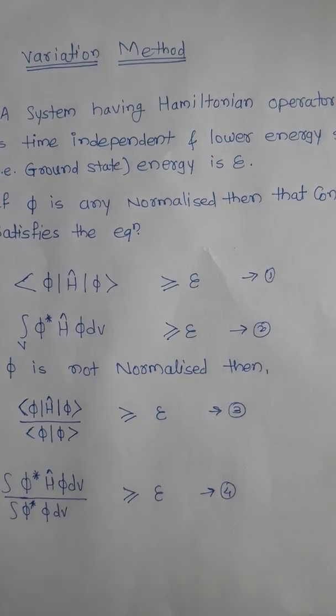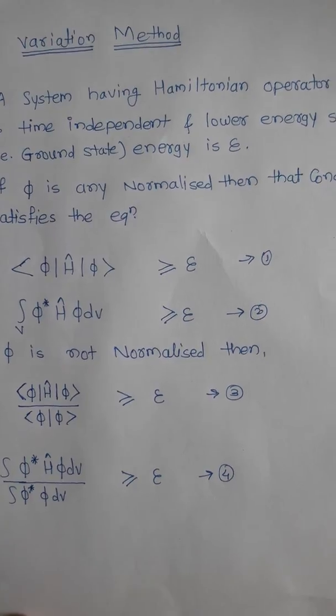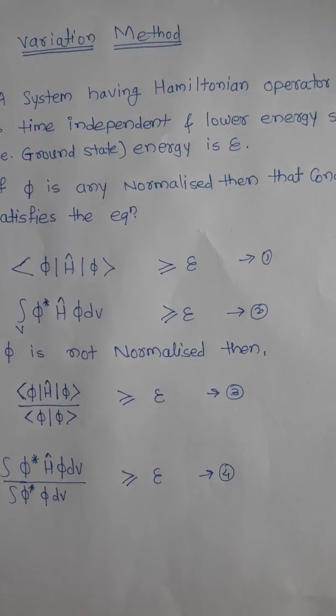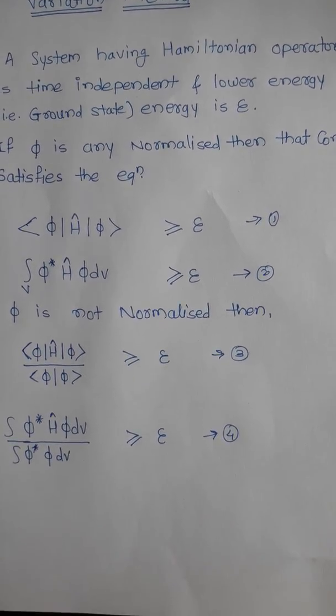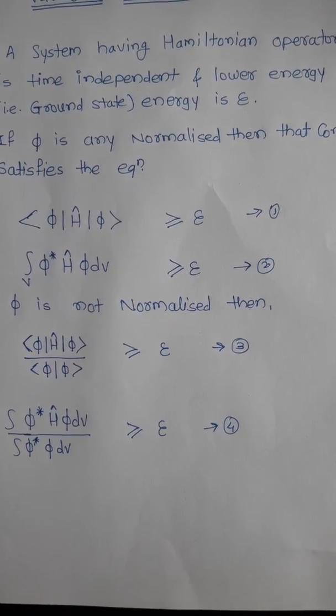the following equations. The equations are: ⟨Φ|H|Φ⟩ is less than or equal to E. This is equation one. And the next one is the integration: ∫Φ†HΦ dv is less than or equal to E. This is the second equation.